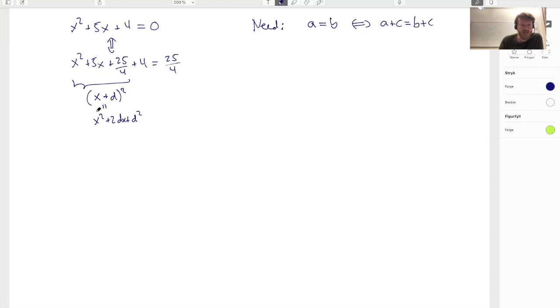And here we have the x squared and here we have the x squared. Here we have 5x and here we have 2dx. So for 2dx to be 5x, this needs to be 5. So for 2d to be 5, well that's the same as if I have d equal to 5 halves.